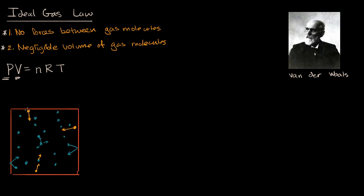So it's reasonable that if you hold everything else constant, the real pressure will be less than the ideal pressure because of these attractive forces. Van der Waals asked: can I quantify this difference? The real pressure is going to be less than the ideal pressure, so the real pressure equals the ideal pressure minus some expression that takes into account these net inward forces, especially from molecules closer to the boundaries.